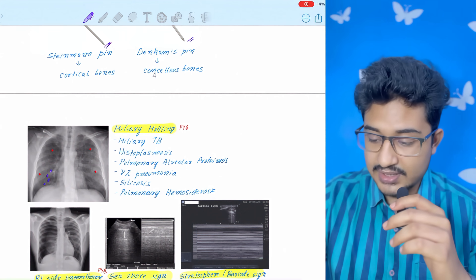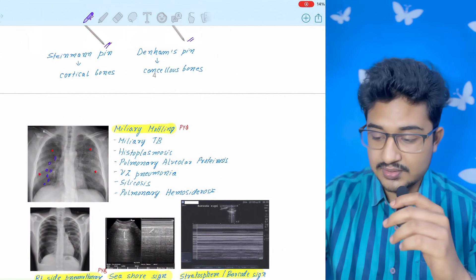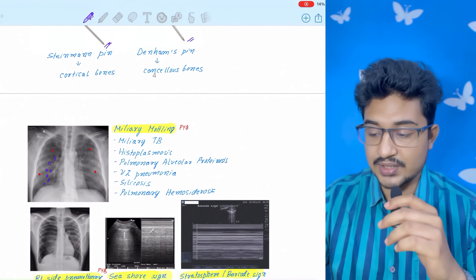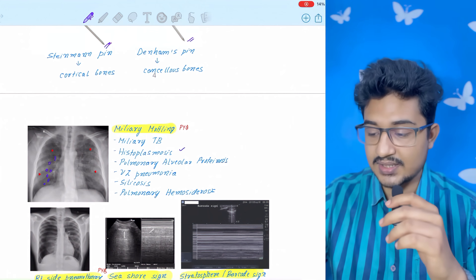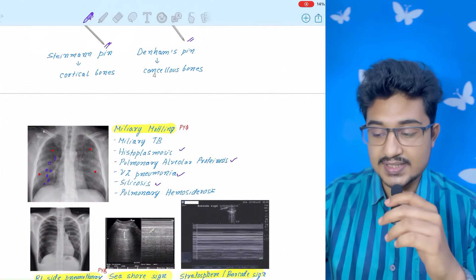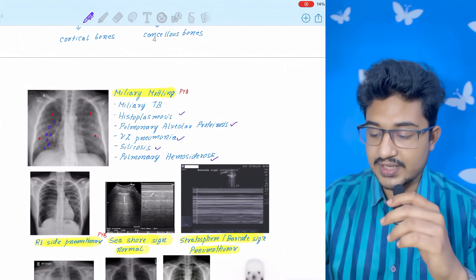This is miliary mottling. Small, small mottling appearance. It is seen most commonly in miliary tuberculosis, but also seen in histoplasmosis, pulmonary alveolar proteinosis, varicella zoster pneumonia, silicosis, and pulmonary hemosiderosis.